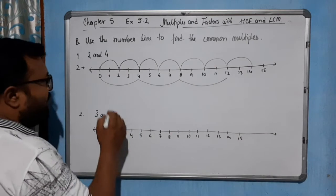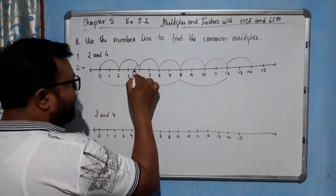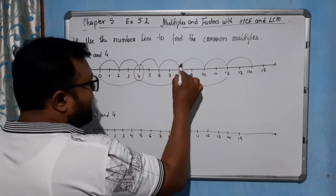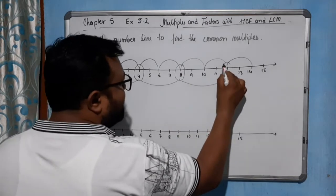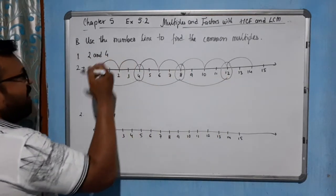Now, we can clearly see that this 4 is common, this 8 is common, and this 12 is common for both 2 and 4.